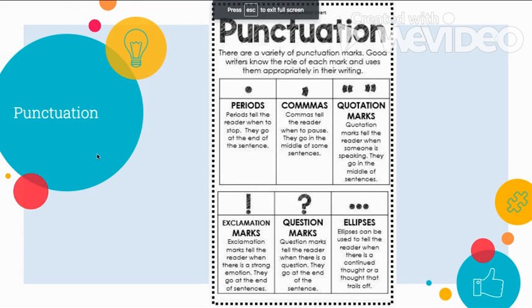Punctuation is like a code for readers — it tells your reader how you want them to read your writing. As you write your paragraphs, you will need to make sure you include correct punctuation when needed. Periods go at the end of sentences, exclamation marks show excitement at the end of a sentence, and question marks tell your reader that you are asking a question. You should also include commas when you want your reader to take a pause while reading, and when you are writing a list and need to separate each item.